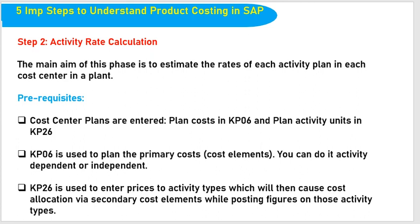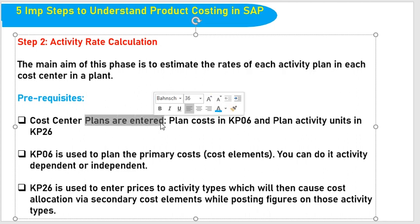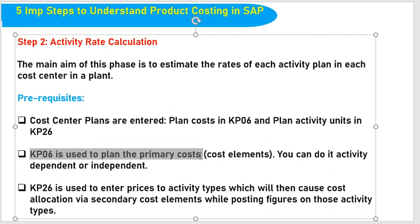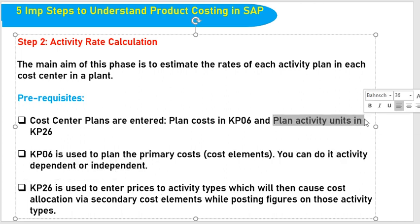What is activity rate calculation? The main aim of this phase is to estimate the rates of each activity plan — for example, the machine hours rate — so that we can plan the cost. Cost center plans are entered as planned cost in KP06 and activity units in KP26. KP06 is used to plan primary cost elements, and you can do it activity-dependent or independent.